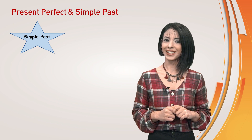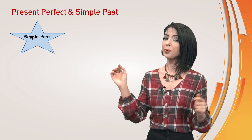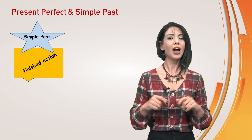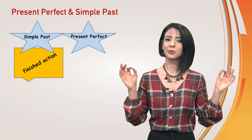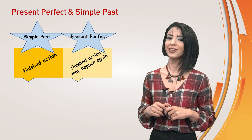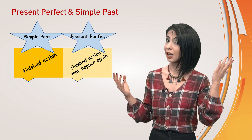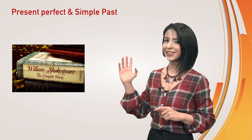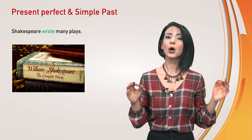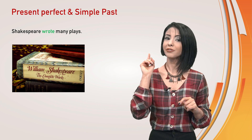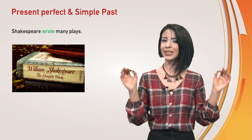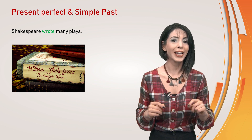Another difference is, we use past simple for a finished action in someone's life. On the other hand, we use present perfect for a finished action in someone's life that may happen again. Look at the examples. 'Shakespeare wrote many plays' — finished action. There is no possibility to recur, now that he is dead and can't write again.